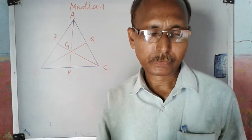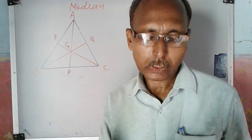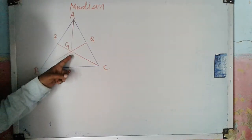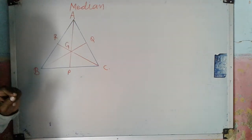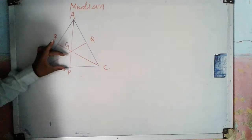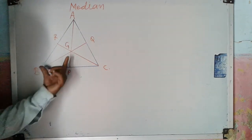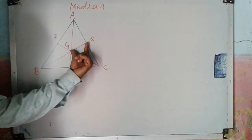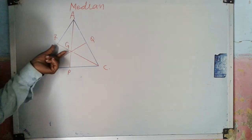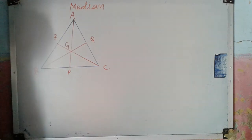All three medians of the triangle are concurrent, and their point of concurrence is called the centroid, denoted by G. This centroid divides each median into two parts. Suppose median AP is divided into parts AG and GP. Median BQ is divided into parts BG and GQ. Median CR is divided into parts CG and RG. Now we will find the relation between these two parts.